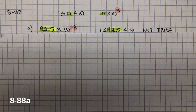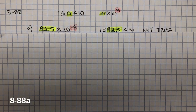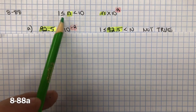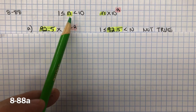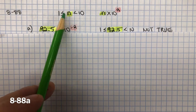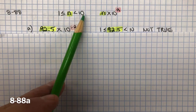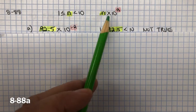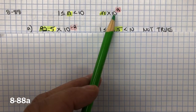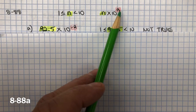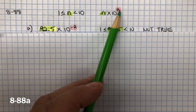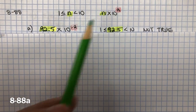In question 88, you need to decide which are correctly written in scientific notation, and if they're not, you need to rewrite them in scientific notation. Remember, for scientific notation, n has to be greater than or equal to 1 but less than 10, written as n times 10 to the a, where a is an integer — positive or negative whole numbers, like 1 or negative 1, 5 or negative 5.